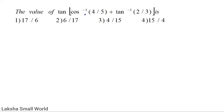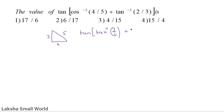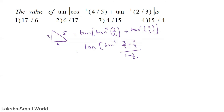Find the value of tan(cos⁻¹(4/5) + tan⁻¹(2/3)). Convert cos⁻¹(4/5) to tan⁻¹: it becomes tan⁻¹(3/4). Then apply tan addition formula: (3/4 + 2/3) divided by (1 − (3/4)×(2/3)).